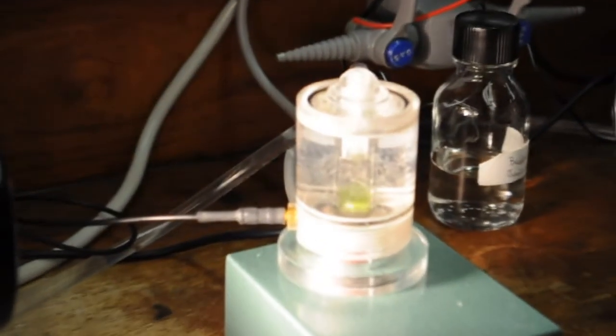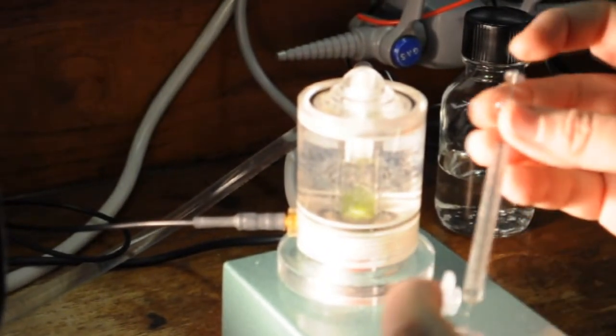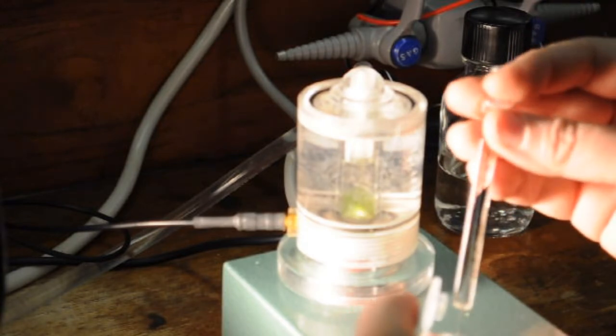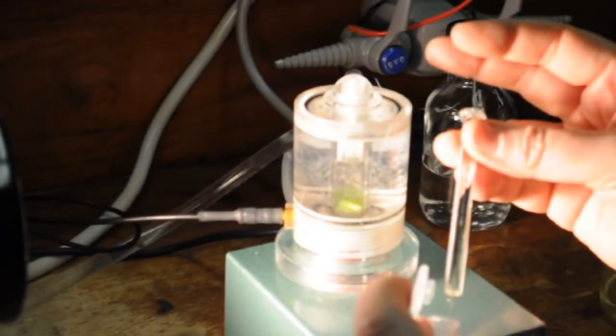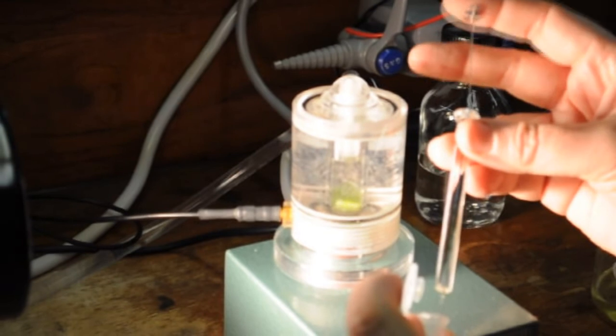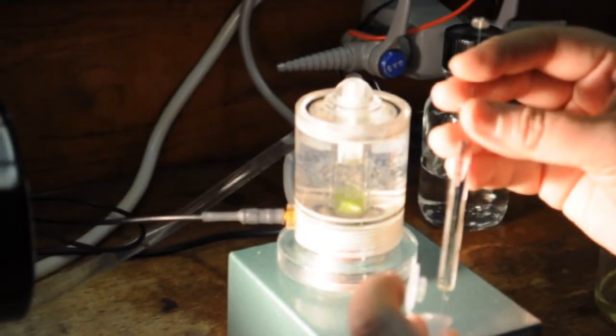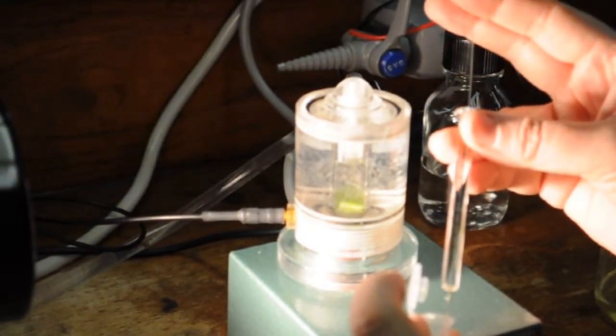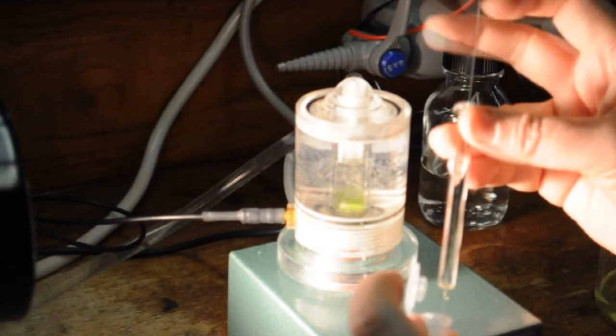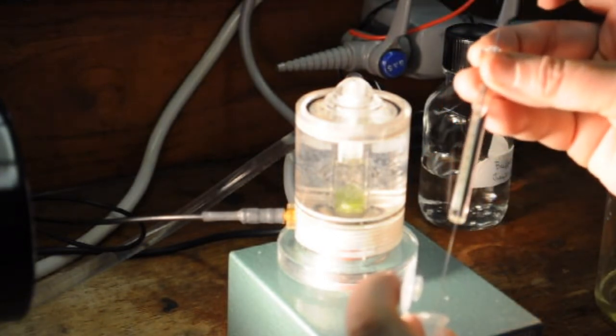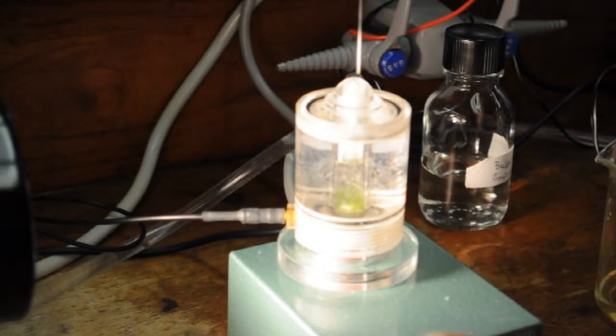For some experiments you will be adding a solution directly to the cuvette. To do this we use a Hamilton syringe and a volume of 5 to 10 microliters of the added solution. Rinse the syringe at least once with the solution you are going to add. Then draw up the required volume. Place the needle all the way into the cuvette plunger. Don't worry, the plunger is designed for this and you will not be able to damage the electrode.